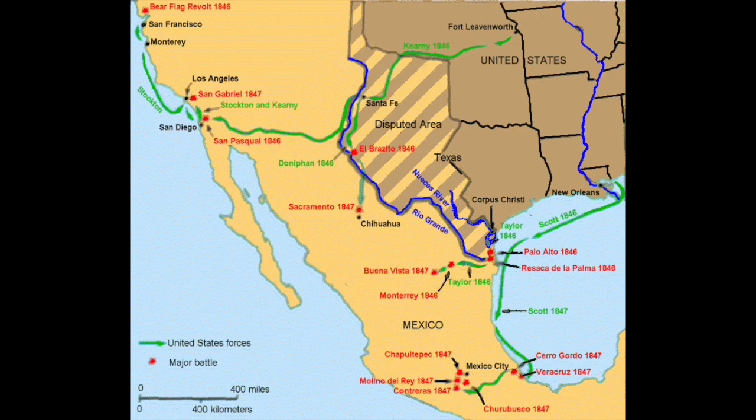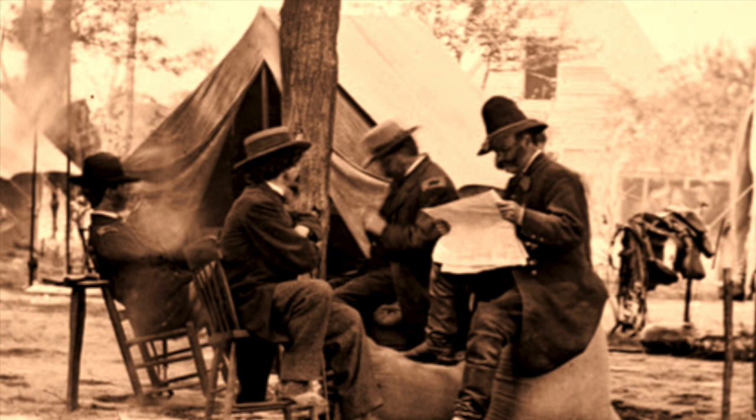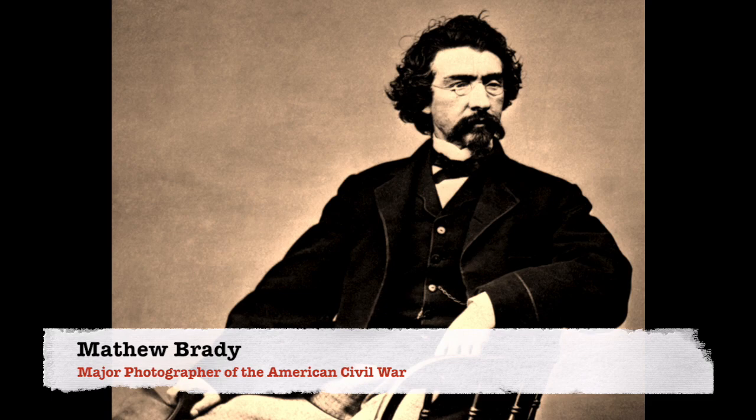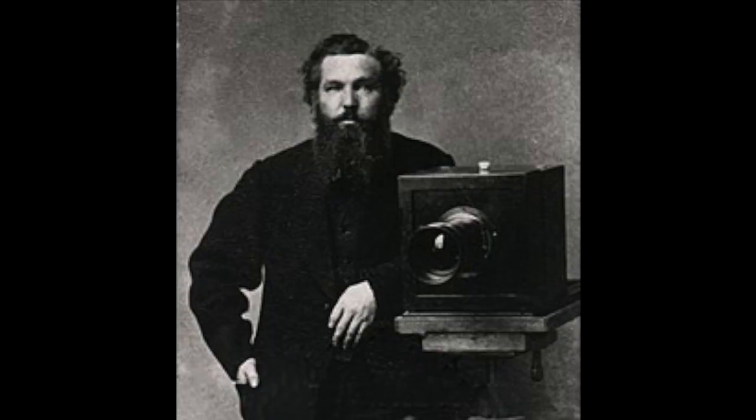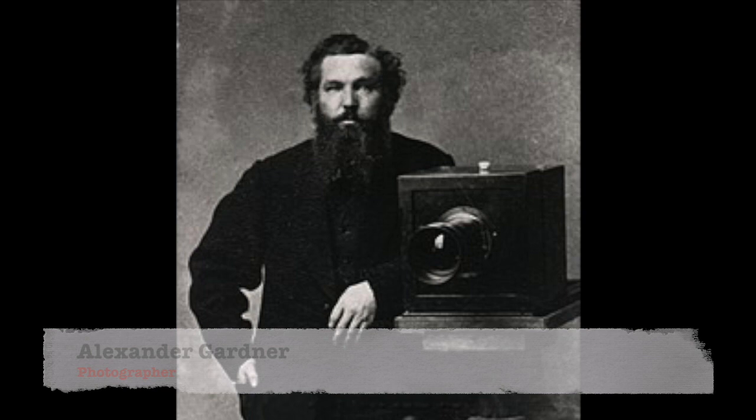By 1860, magazines and newspapers were able to print photographs in their publications using the photo engraving process. This would become a very handy tool for photographers of the American Civil War, namely Matthew Brady. In his mobile darkroom, he and his assistants took thousands of photographs that showed both sides of the American Civil War from 1861 to 1865. Mr. Brady would hire several assistants to help him, including Alexander Gardner, Timothy O'Sullivan, and William Jackson.